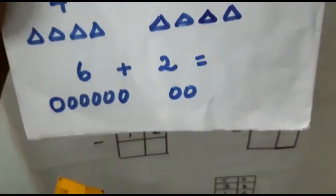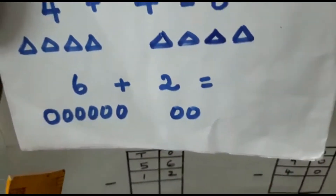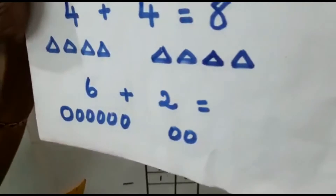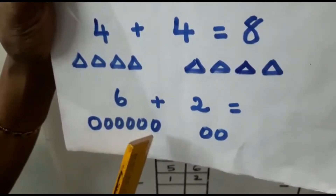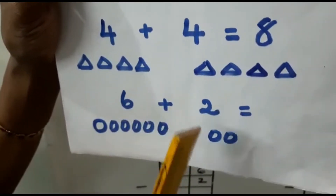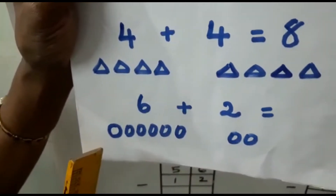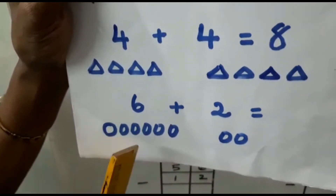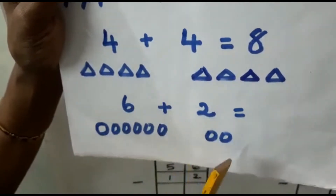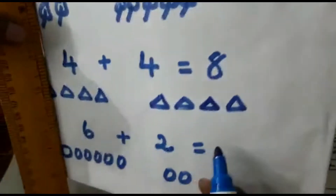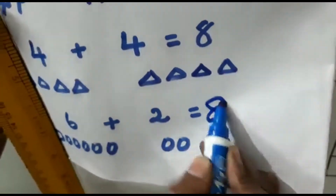Now again we are going to see 6 plus 2. We can count how many circles are here: 1, 2, 3, 4, 5, 6. Plus 2 we are going to count: 1, 2. All together how many? 1, 2, 3, 4, 5, 6, 7, 8. 8 circles. All 8 is the answer.